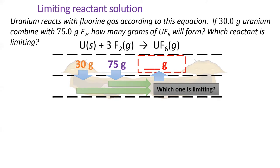To convert 30 grams of uranium to grams of uranium hexafluoride, first multiply by the molar mass of uranium in blue, then multiply by the mole ratio from balanced chemical equation. Lastly, multiply by the molar mass of uranium hexafluoride.